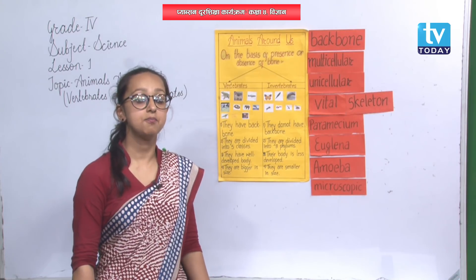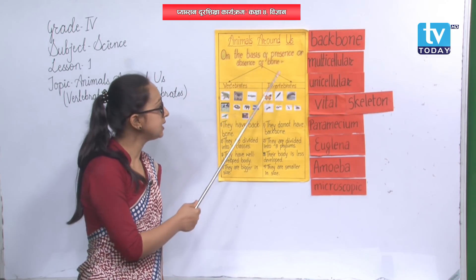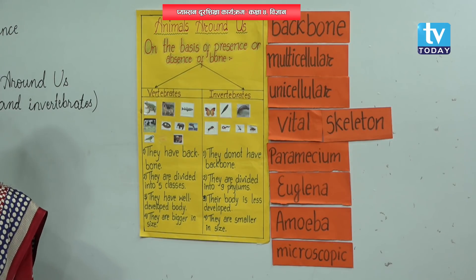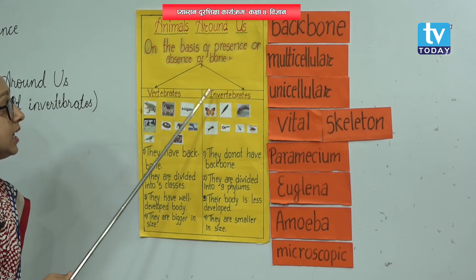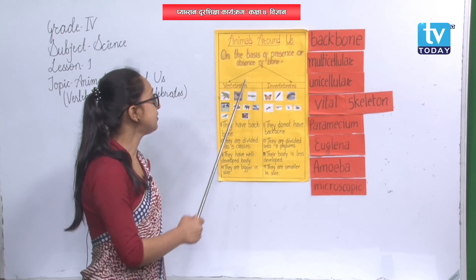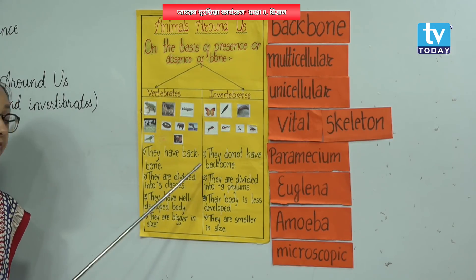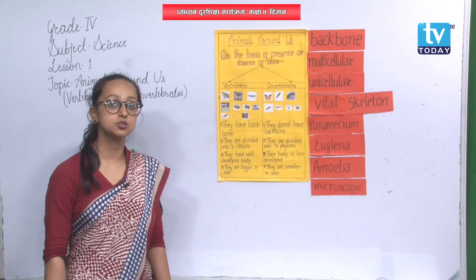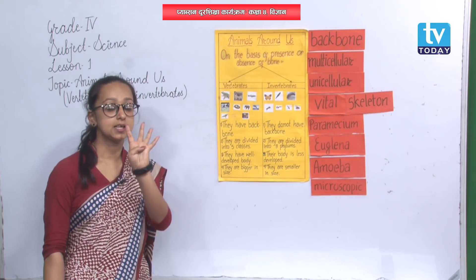Vertebrates are those animals that have backbone — they have bones in their bodies. Invertebrates are those animals that do not have backbone or bones in their bodies. Vertebrates have backbone, and they are divided into five classes: Pisces (fishes), Amphibia, Reptilia, Aves, and Mammals. These classes will be discussed in more detail in grade five.